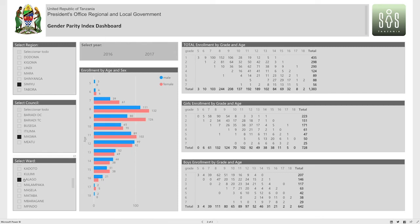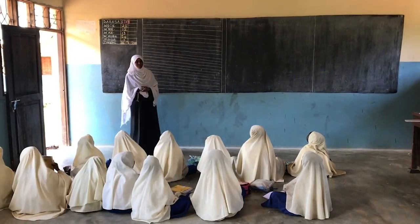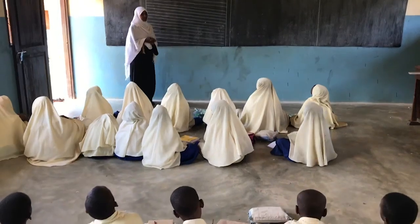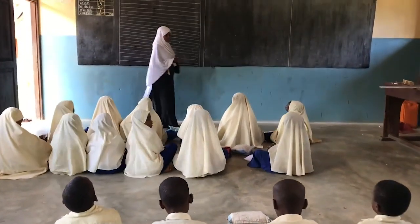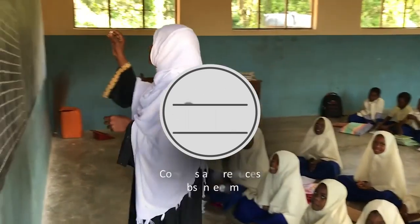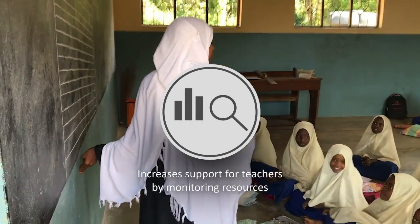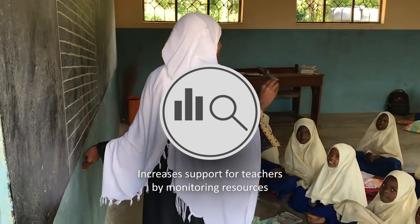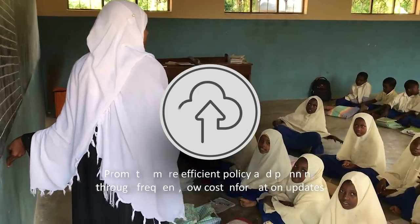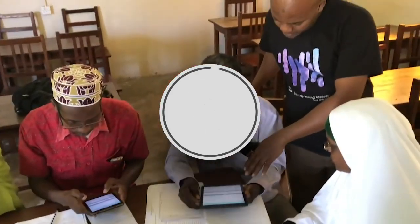These measures show periodic achievement of national goals by measuring progress toward specific local goals. M360SIS shifts the focus to the school level, which provides the following benefits: empowers school-level decision-making, controls and reduces absenteeism, increases support for teachers by monitoring resources, and promotes more efficient policy and planning through frequent, low-cost information updates.